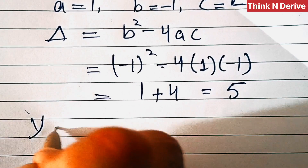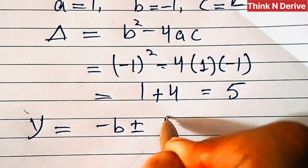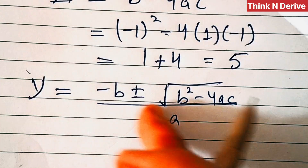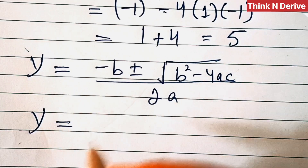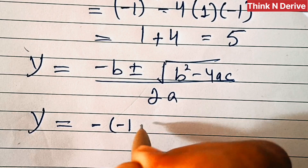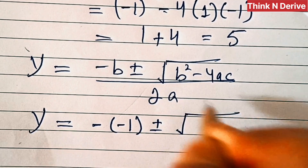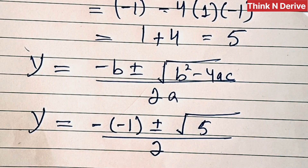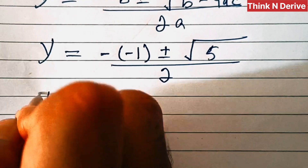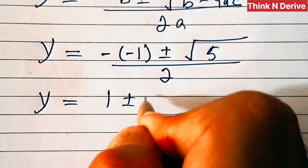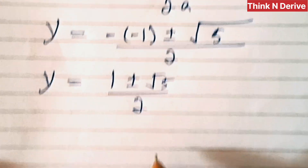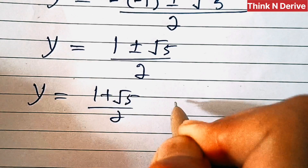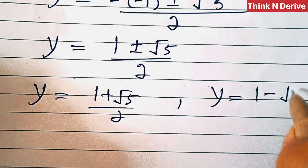Now y equals minus b plus or minus square root of (b squared minus 4ac) divided by 2a. Substituting, we get y equals 1 plus or minus square root of 5, divided by 2. So we have two solutions: y equals (1 plus root 5) over 2, and y equals (1 minus root 5) over 2.